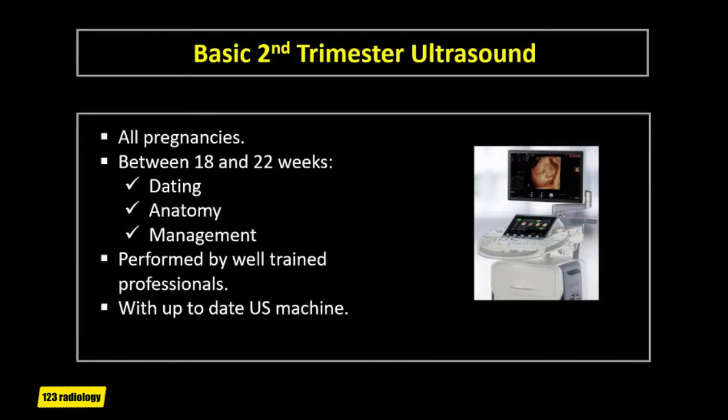The basic second trimester fetal ultrasound should be proposed to all pregnancies, and usually we perform it between 18 and 22 weeks of gestation. It allows precise dating of pregnancy and good visualization of the fetus, which still allows time for management. It must be performed by well-trained professionals with an up-to-date ultrasound machine.